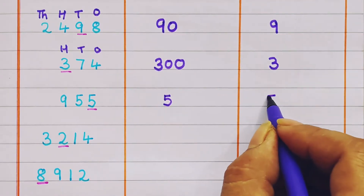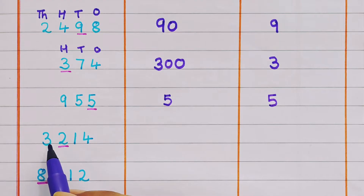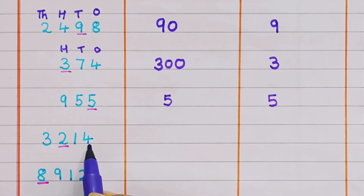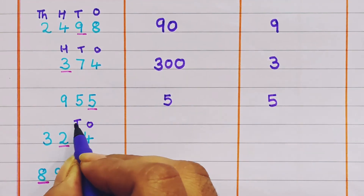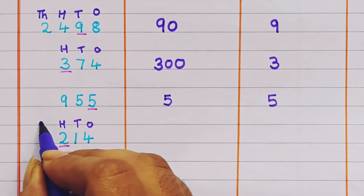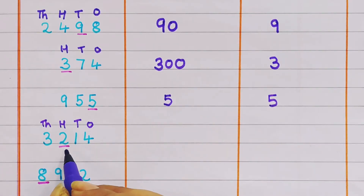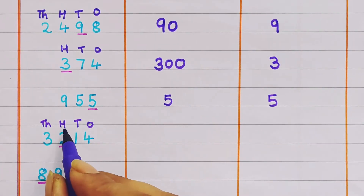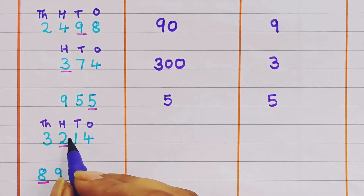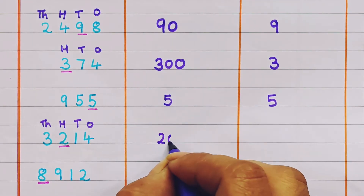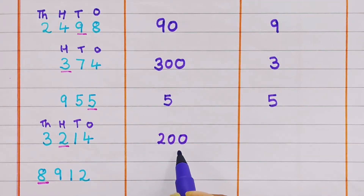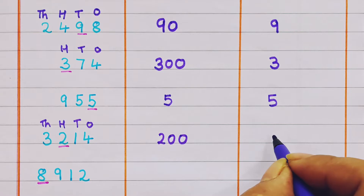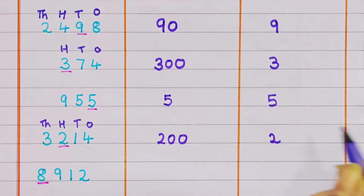The face value will be the number itself, so again this will be 5. Next: 3214. Let's give the places — ones, tens, hundreds, thousands. 2 is present in the hundreds place, so the place value is 200 and the face value will be 2.